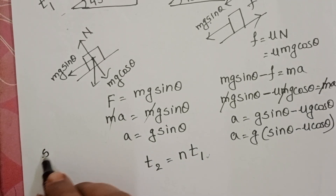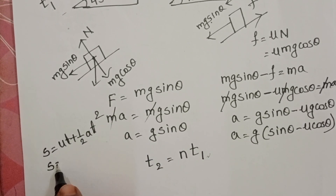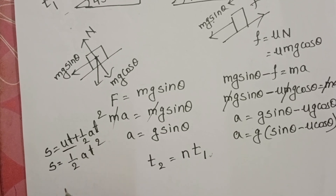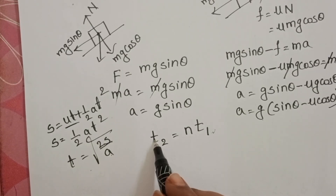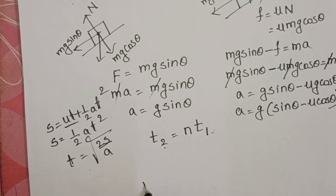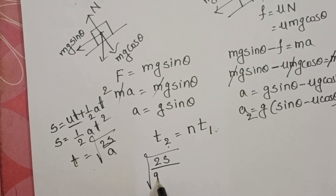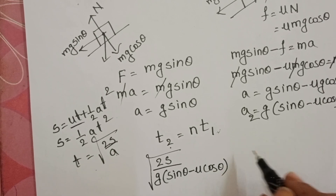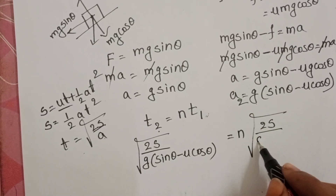Using the equation of motion S = ut + ½at², with initial velocity u = 0, we get S = ½at², so time T = √(2S/A). For T2 (rough plane): T2 = √(2S / g(sin θ − μ cos θ)). For T1 (smooth plane): T1 = √(2S / g sin θ). Substituting into T2 = n·T1 gives: √(2S / g(sin θ − μ cos θ)) = n · √(2S / g sin θ).